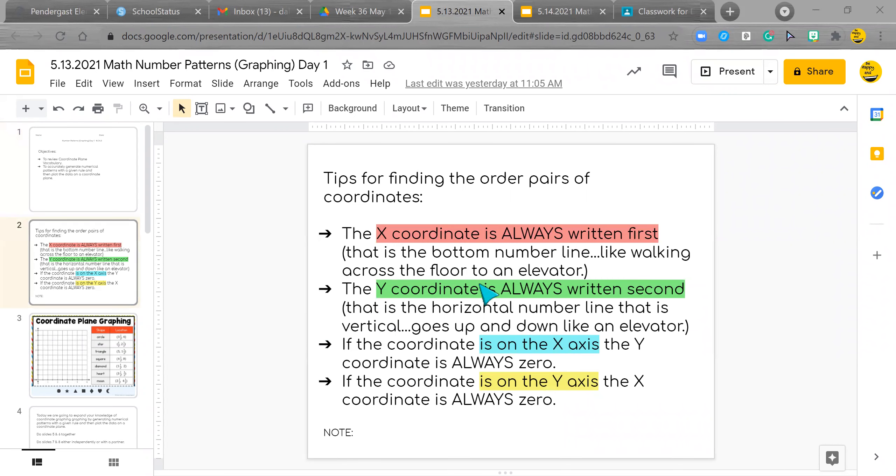This is stuff we know. Remember x always is written first and it's the bottom number line. It's like you walking across the floor to an elevator. The y-coordinate's written second, in ABC order, and it's the horizontal number line that is vertical. So it's a vertical number line and it goes up and down like an elevator. By the way, remember all our x and y's always start at zero at the origin.